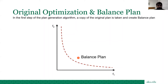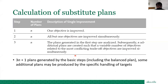Once you have made the plan, you run MCO and the system generates the balance plan out of your best plan. The Pareto surface is this line, and our plan lies somewhere here. The calculation of substitute plans is done by this algorithm: if there are N objectives, it multiplies N by three and adds one to generate the basic steps — so it generates 3N+1 plans depending on how many objectives you have selected to trade off.